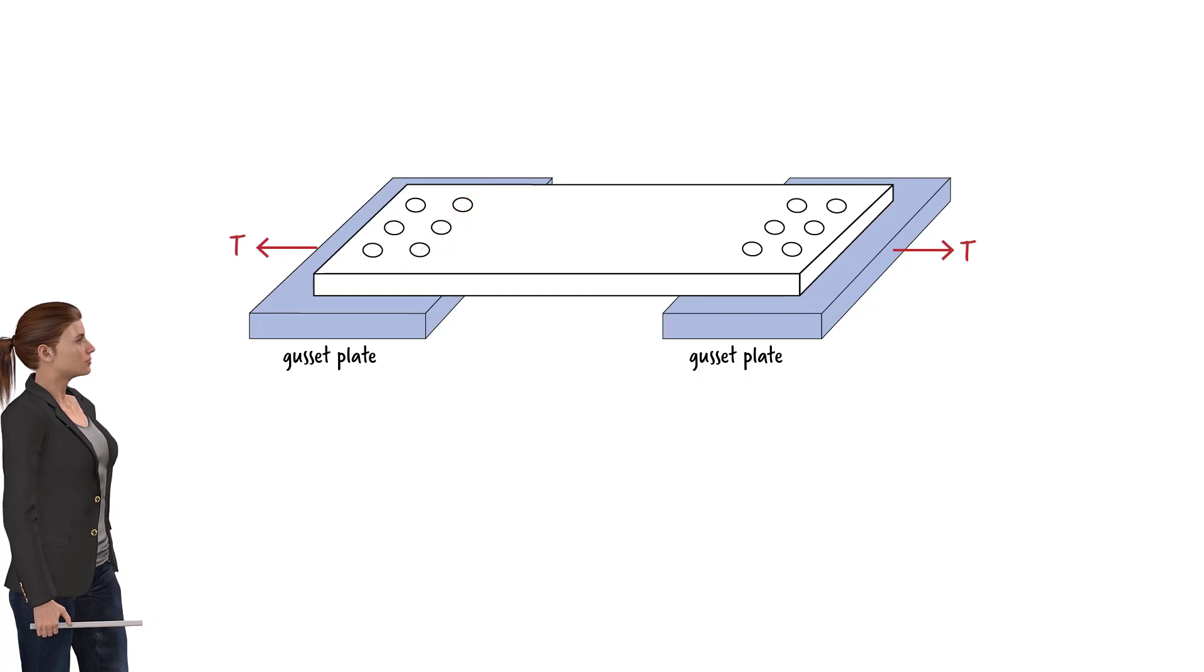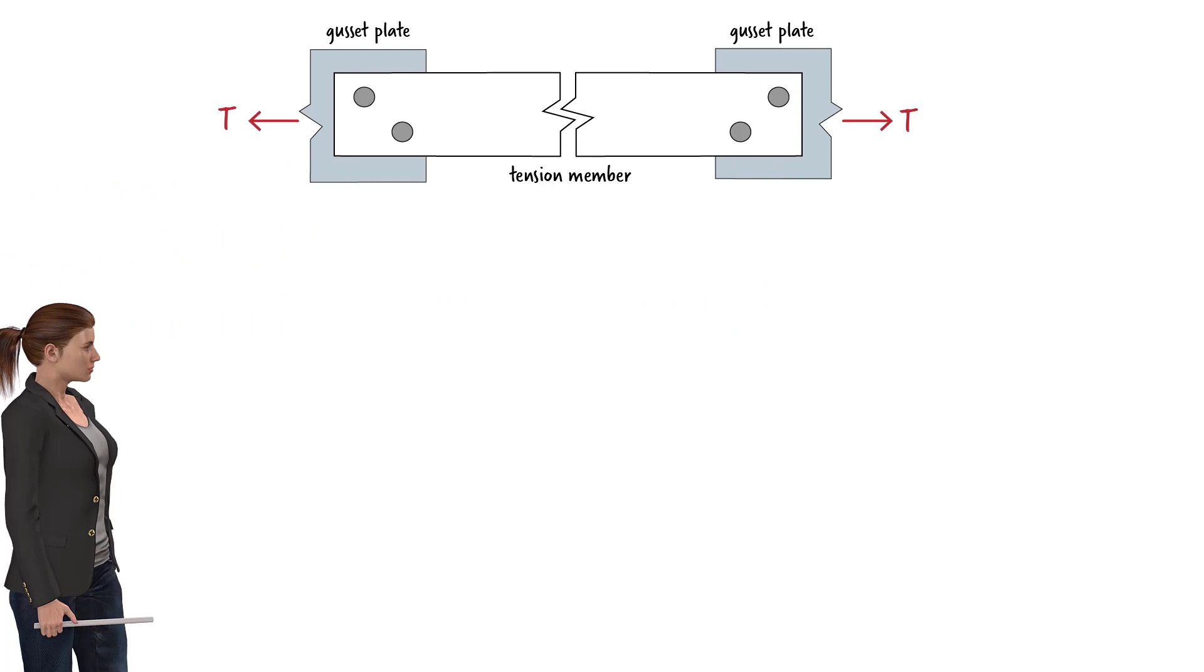However, determining the critical path of failure may not be straightforward when the holes are staggered. Suppose a tension member is connected to a gusset plate at each end using two bolts, as shown here.